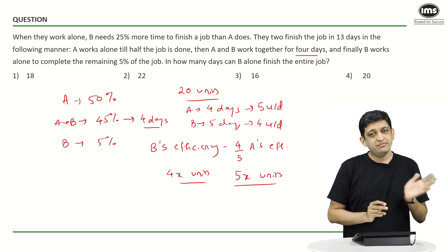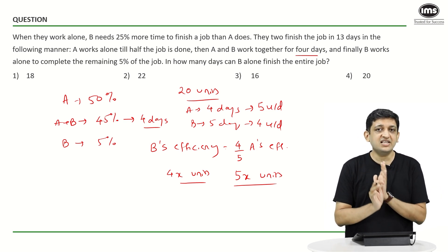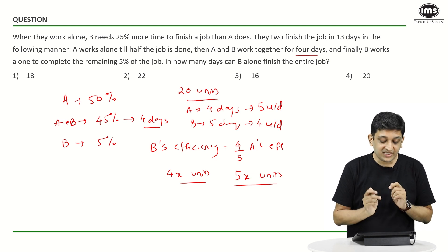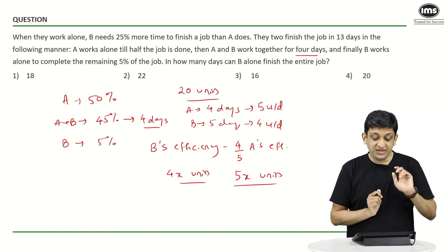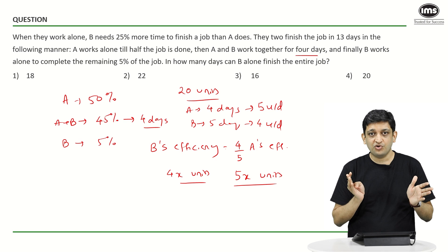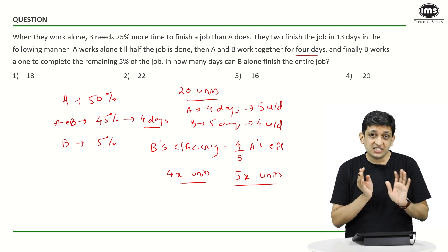Now what has happened here is 45 percent has been done over 4 days, meaning A has worked for 4 days, B has worked for 4 days, together they have done 45 percent. Now what can we deduce from this? For every 5 units that A does, B does 4 units, together they are doing 9 units.